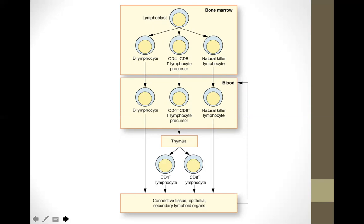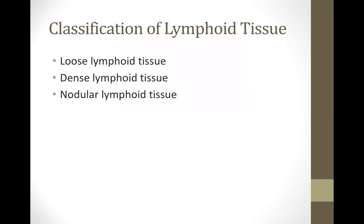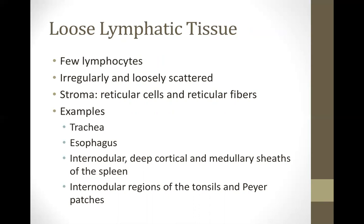The bulk of our discussion is the classification of lymphoid tissue. Lymphoid tissue is a subtype of connective tissue, and there are three specific subtypes we will discuss one by one.